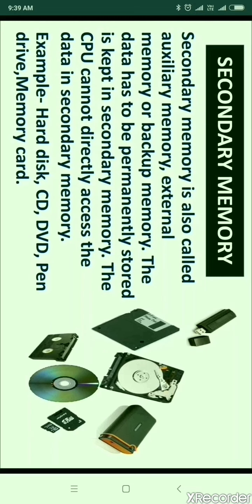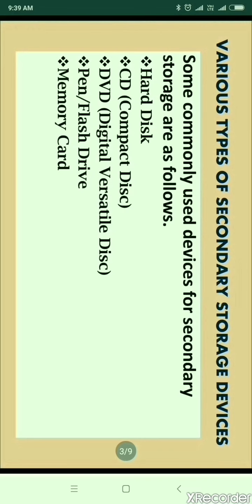Secondary memory is used for bulk storage of programs, data, and other information. It has much larger capacity than primary memory. Data accessing speed of secondary memory is slower than primary memory. Secondary memory is non-volatile in nature, which means the data is stored permanently even when the power of the computer is switched off. It is the slowest and cheapest form of memory, also called secondary storage or mass storage media.